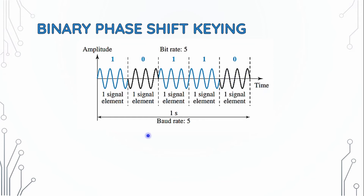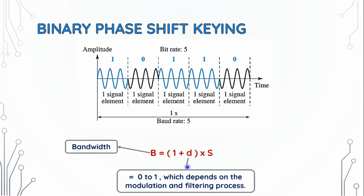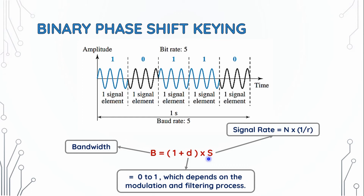The bandwidth is equal to (1 + d) × S, where d depends on the modulation and filtering process and ranges from 0 to 1. The signal rate is N × (1/r), where N is the number of bits and r is the number of bits per signal element.